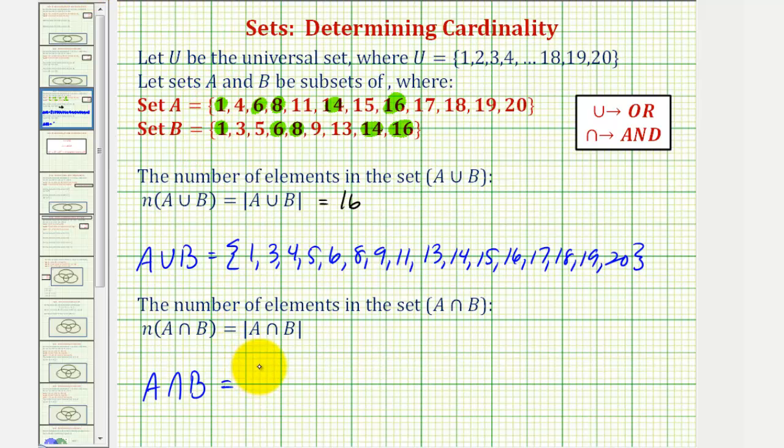So A union B contains one, six, eight, fourteen, sixteen.